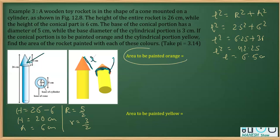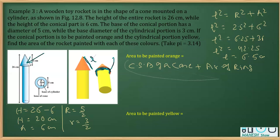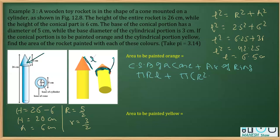The area to be painted orange comprises the curved surface area of the cone plus the area of the ring. CSA of a cone is πRL, where R is capital R and L is the slant height. Area of the ring is π(R² − r²). Taking π as common, this becomes π times (RL + R² − r²).